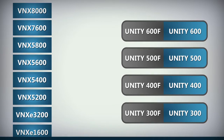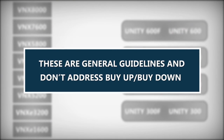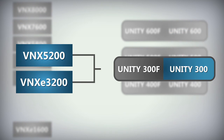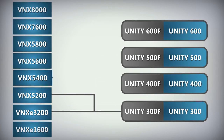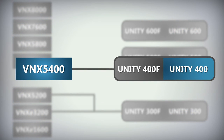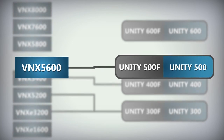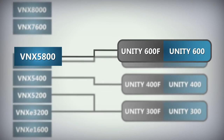Here is how the various Unity and VNX/VNXe models align. Please note, these are positioning guidelines to help understand the alignment. Unity 300 and 300F align to VNXE3200 and VNX5200's previous market space. Unity might be a slight premium to the VNXE3200, but it includes more value, modern data services, an all-flash design, and it's more powerful. Unity 400 and 400F align to the VNX5400's previous market space. Unity 500 and 500F align to the VNX5600's, and Unity 600 and 600F align to the VNX5800's previous market space.